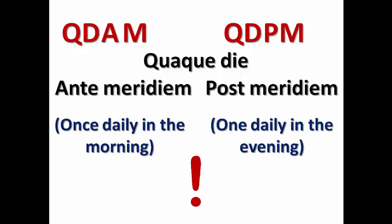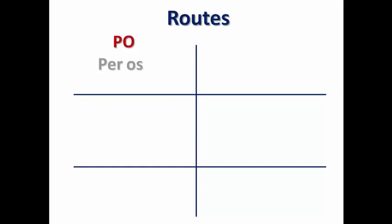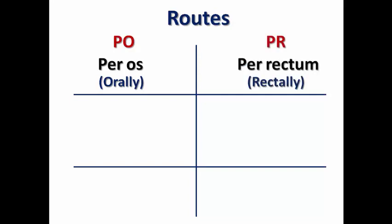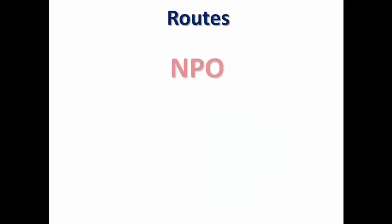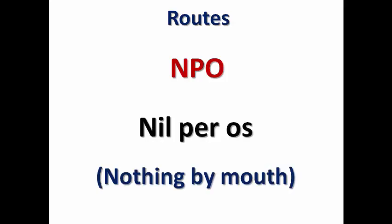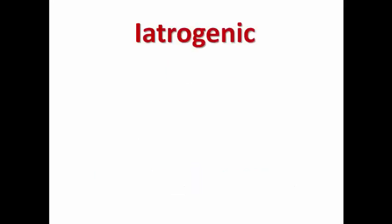Regarding routes of administration: PO stands for 'per os,' meaning this medication should be taken orally. PR stands for 'per rectum,' meaning taken rectally — like suppositories or enema. IV stands for intravenous, IM for intramuscular, SC for subcutaneous injections, and SL for sublingual route, as with the most famous nitrates and some forms of oral steroids. NPO stands for 'nil per os,' meaning nothing by mouth — so the patient should not receive any meals or medication by mouth, for example due to intestinal obstruction.